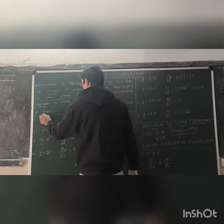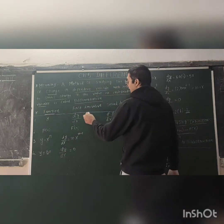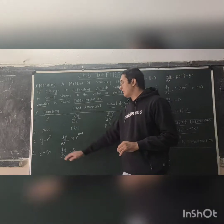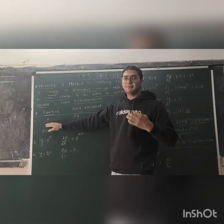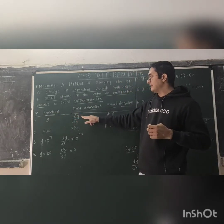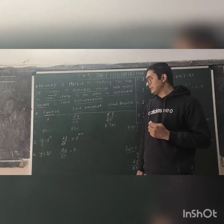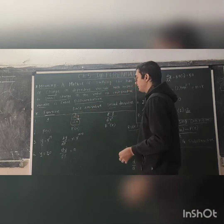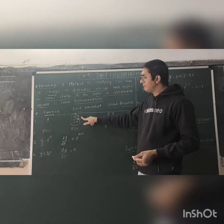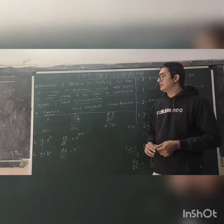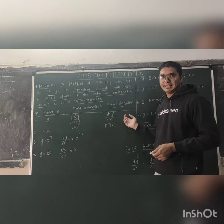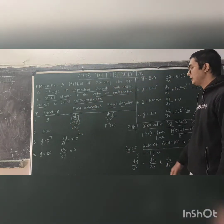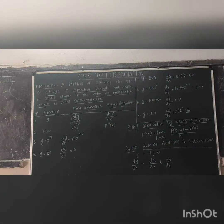Now there are some functions where one value is given, and they ask to find the first derivative and then the second derivative. So if our normal function is Y and we want to use a derivative, then the first derivative is called DY upon DX. If the function is Y and we apply the derivative operator D upon DX — D upon DX means 'for derivatives' — then for the second derivative, it becomes D²Y upon DX².